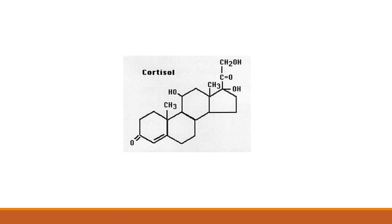The body naturally produces cortisol in the adrenal gland, and it is our endogenous glucocorticoid. Many drug companies produce derivatives of cortisol which have better pharmacokinetics and may have stronger glucocorticoid action, less mineralocorticoid action, or other special functions. Therefore, when I talk in this lecture about using cortisol, you can replace that word with betamethasone, prednisolone, and other cortisol derivatives.